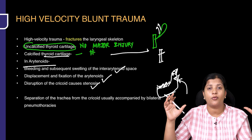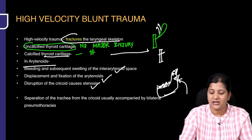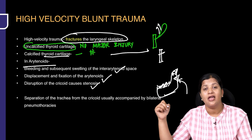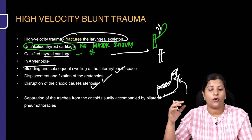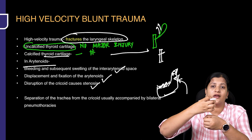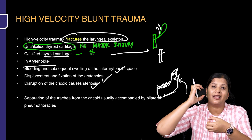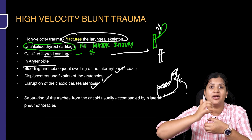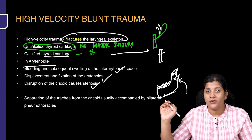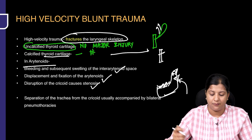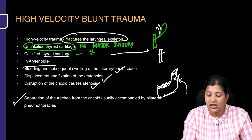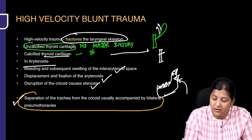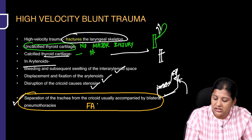Unlike low velocity trauma where there is probably no injury, high velocity trauma can cause fractures of the laryngeal skeleton. Furthermore, a very high velocity trauma hitting the larynx can cause the cricoid, which sits on the trachea, to get separated from the trachea — resulting in cricotracheal separation and pneumothorax. This can be fatal and life-critical for the patient.